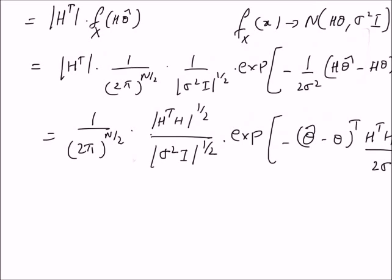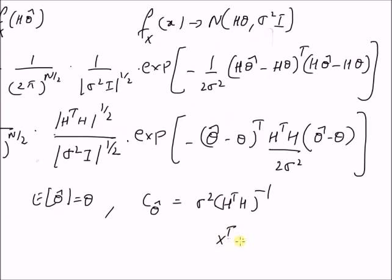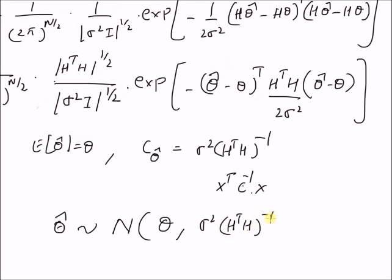Clearly, from this structure, we can see that the mean is given by theta — that is, the expectation of theta hat equals theta — and the covariance of theta hat equals sigma squared times H transpose H whole inverse, because the exponent has the structure x transpose C inverse x of a Gaussian distribution. Comparing this exponent, the covariance matrix of theta hat is given by sigma squared times H transpose H inverse. Therefore, the estimator theta hat follows a Gaussian distribution with mean equal to the true value theta and covariance equal to sigma squared times the inverse of H transpose H. Thanks for watching.